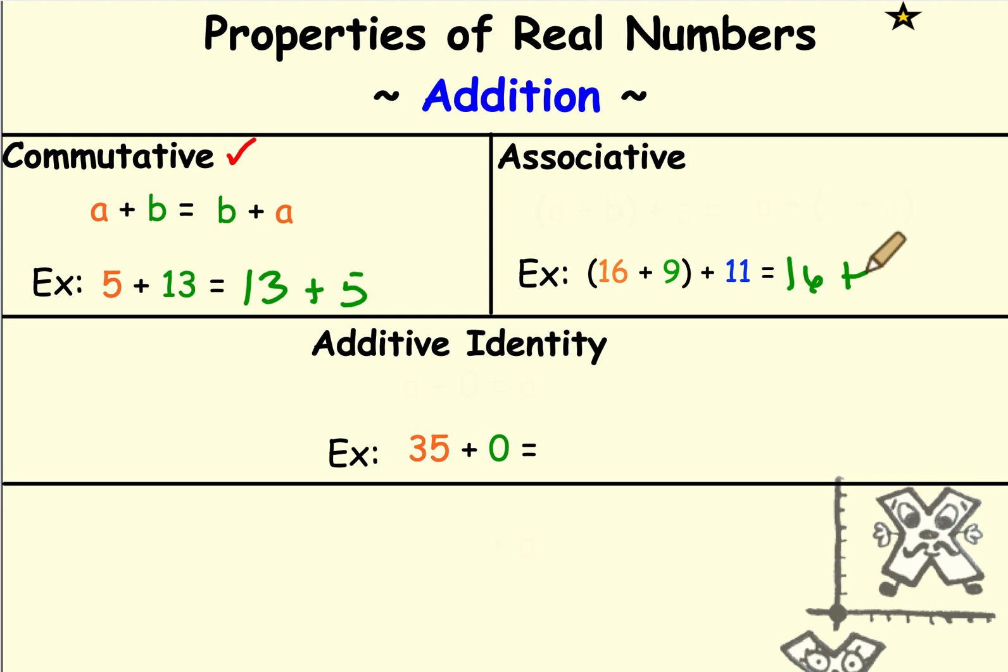What the associative property does is it allows us to change the grouping when we're adding numbers. So the associative property for addition says that when I have a set of numbers being added, how I group or which numbers I choose to add first is up to me. I can choose to add the first two numbers first, or I can choose to use the second set of two numbers.